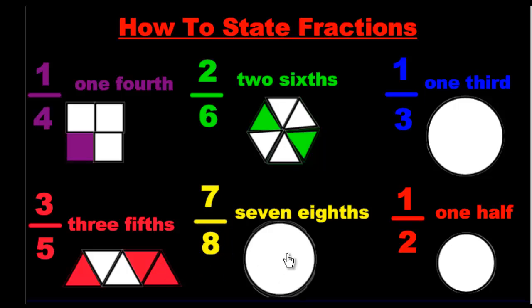We got 7 eighths. So how many pieces do I break this into? Do I 7 or 8? Denominator. Right. You got to break it into 8. And now we can choose any 7.